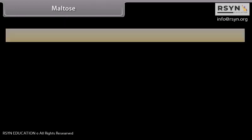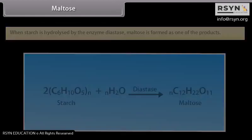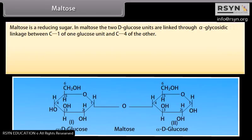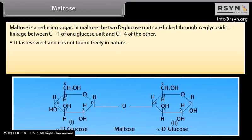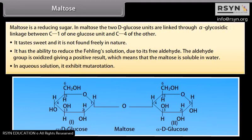When starch is hydrolyzed by the enzyme diastase, maltose is formed as one of the products. One mole of maltose on hydrolysis with dilute acids yields two moles of D-glucose. Maltose is a reducing sugar. The two D-glucose units are linked through alpha-glycosidic linkage between C1 of one glucose unit and C4 of the other. It tastes sweet and is not found freely in nature. It has the ability to reduce Fehling's solution due to its free aldehyde group. In aqueous solution, it exhibits mutarotation.